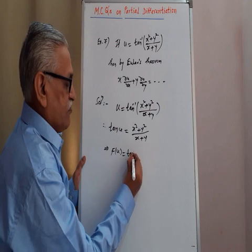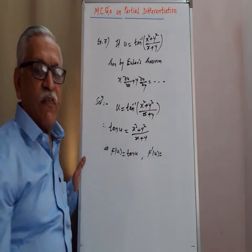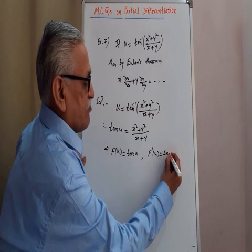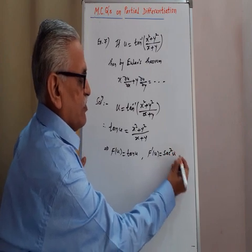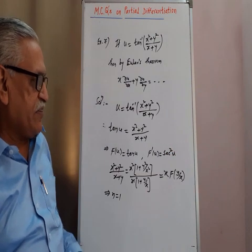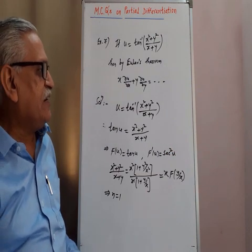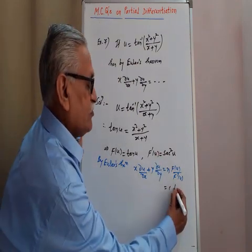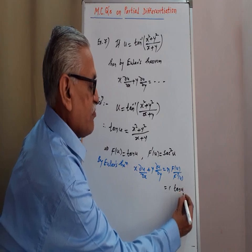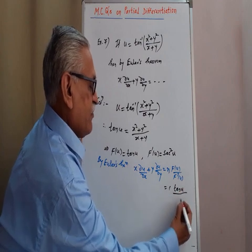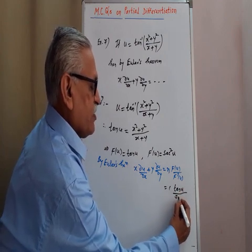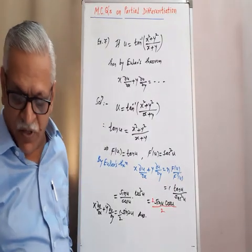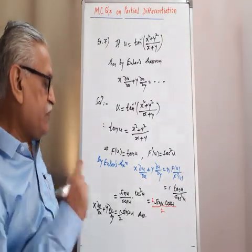Taking the derivative: the derivative of tan is secant squared u, so f of u is tan u and f dash of u is secant squared u. Therefore the answer is option b.